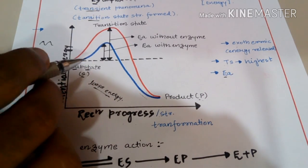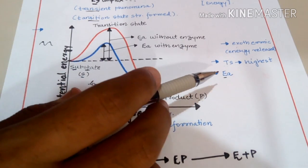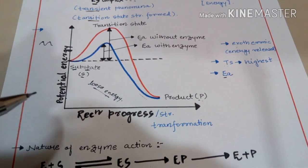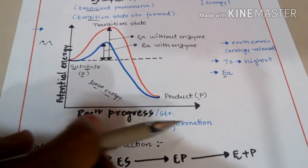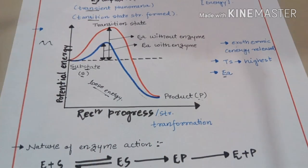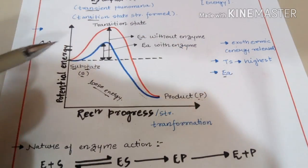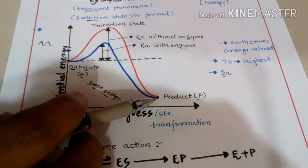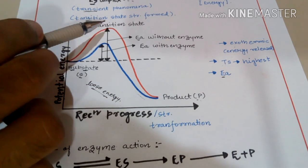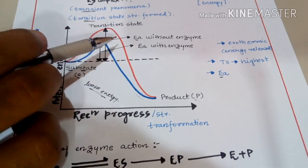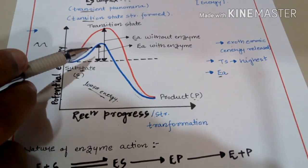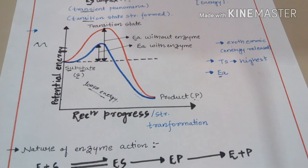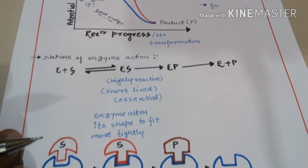The role of the enzyme is to reduce the amount of activation energy needed to proceed a particular reaction. In this graph of potential energy versus reaction progress, the energy of the substrate is more than the energy of the product, so the reaction is exothermic. The transition state has the highest energy, and the activation energy without enzyme is much higher than with enzyme — the enzyme reduces this barrier so more substrate molecules can convert into product.